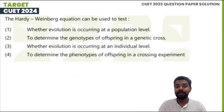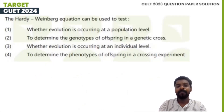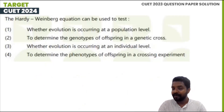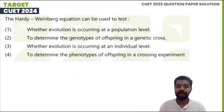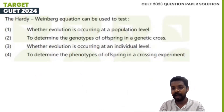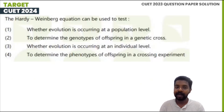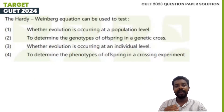The Hardy-Weinberg equation: p² + q² = 1, where allelic frequency equals 1. The conditions are: indefinitely large population, no mutation, no natural selection, no migration, and random mating. Under these conditions, allelic frequency will remain constant from generation to generation.